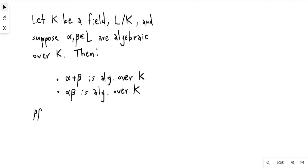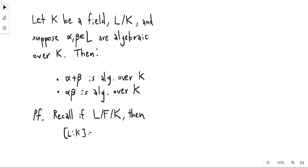So how are we going to prove this? We're going to use properties of field extensions. Let's recall that if I have three fields L over f over k, then the degree of L over k equals the degree of L over f times the degree of f over k, where one or all of these may equal infinity. This is basically the tower law for field extensions.